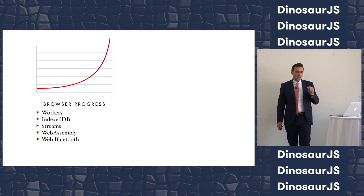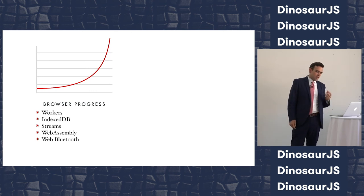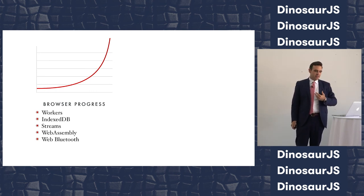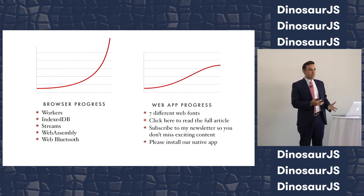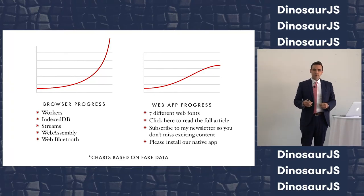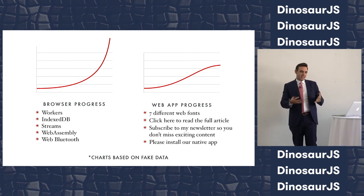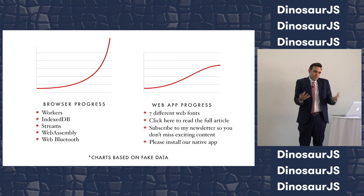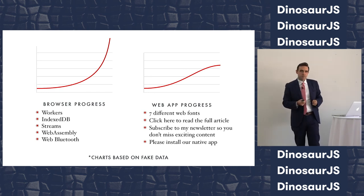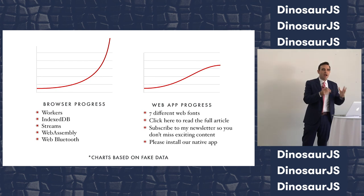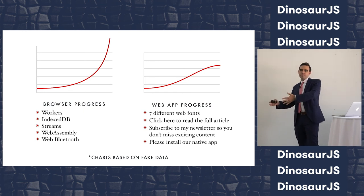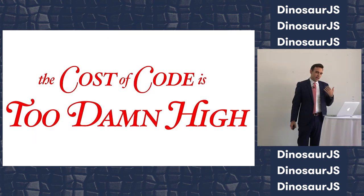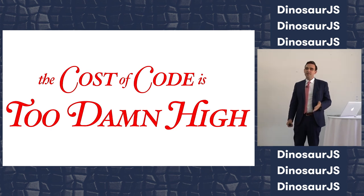Browsers have advanced at a remarkable rate over the last 10 years, and it feels like the web has more momentum than ever before. Every new browser release brings so many new features. And despite all of this incredible innovation — from IndexedDB to web workers — it doesn't feel like the day-to-day experience of using web apps has actually improved that much in the past three or four years. So why don't these radical improvements happening in the browser translate into radically improved web applications? The reason is that the cost of code is too damn high.